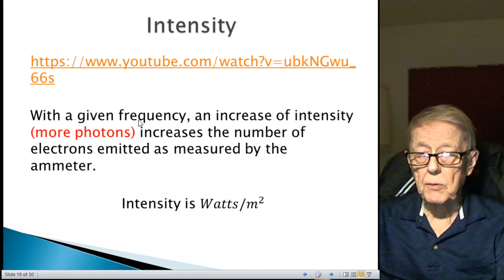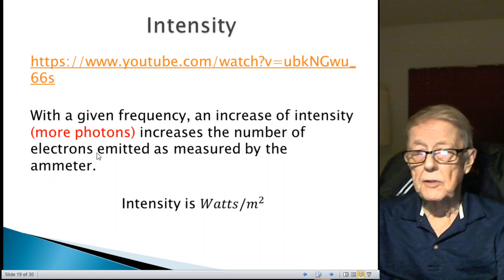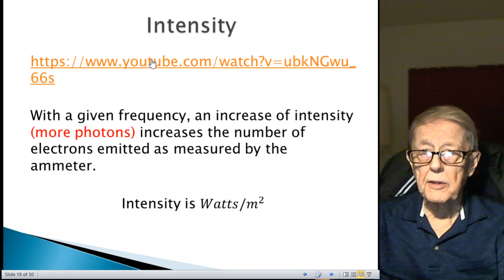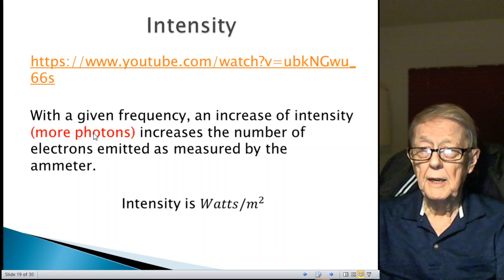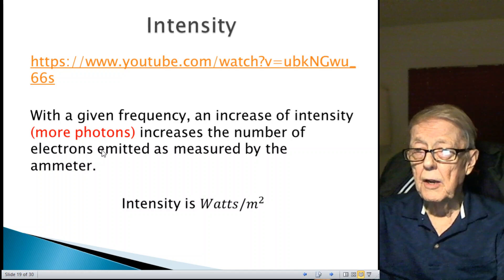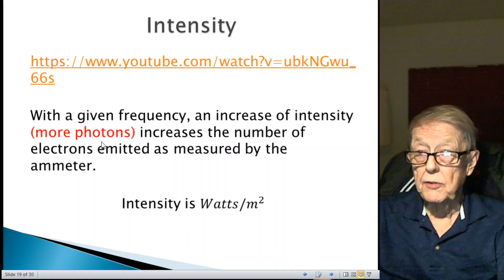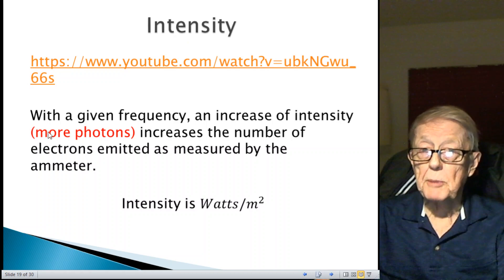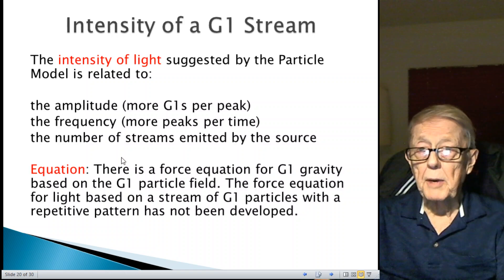This is the result of that one's experiment with a given frequency. That's the frequency was set at a high frequency. With a given frequency, an increase of intensity, that is an increase of more photons, increases the number of electrons. That was the conclusion. But I added this here. The video didn't say that. I found this in another video where it clearly explained that more intensity meant more photons. A red photon has the same energy all the time. According to that equation, energy equals Planck's constant times frequency. Red always has that same energy. So when you get an increase intensity, it's because you have more photons.